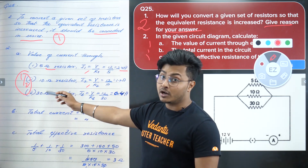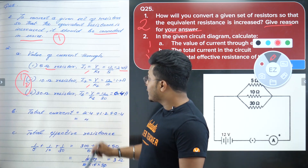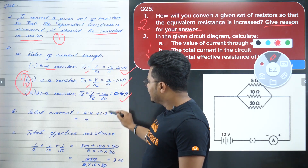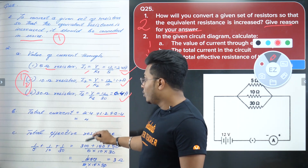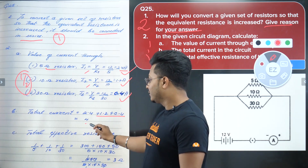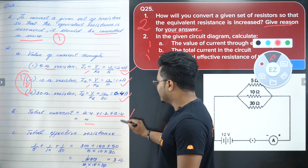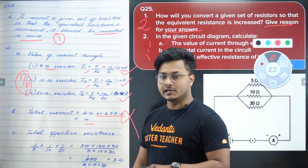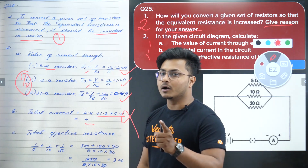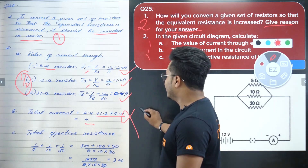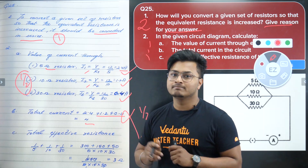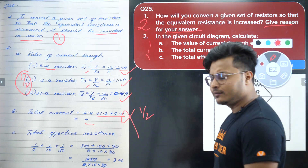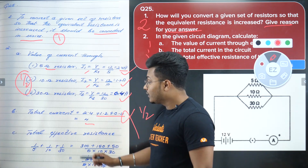The total current is 2.4 + 1.2 + 0.4. Answers are correct but the SI unit — ampere — is missing. There are two ways to handle this: cut the full mark, or cut half a mark. I'm cutting only half a mark. Don't forget the SI unit next time — always write it. Half mark cut for missing unit.